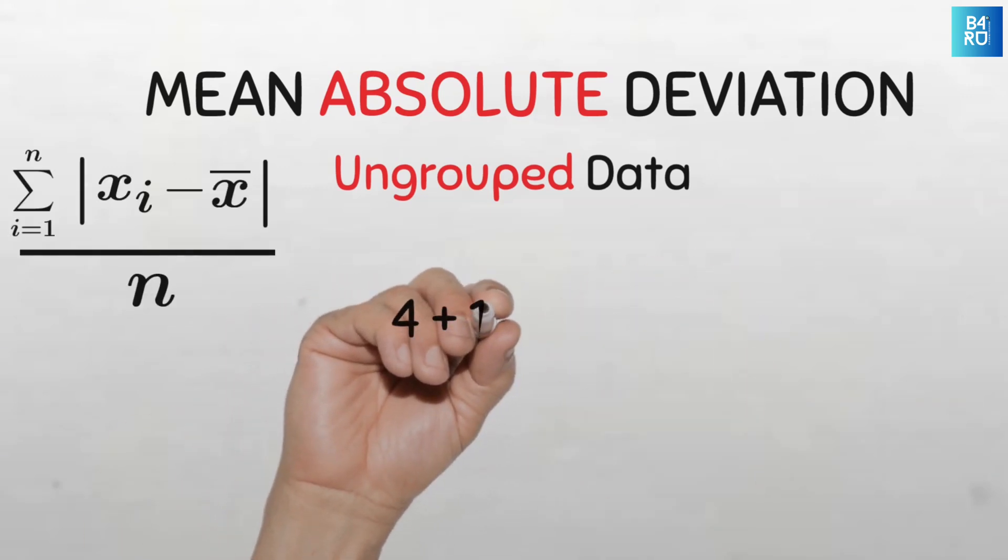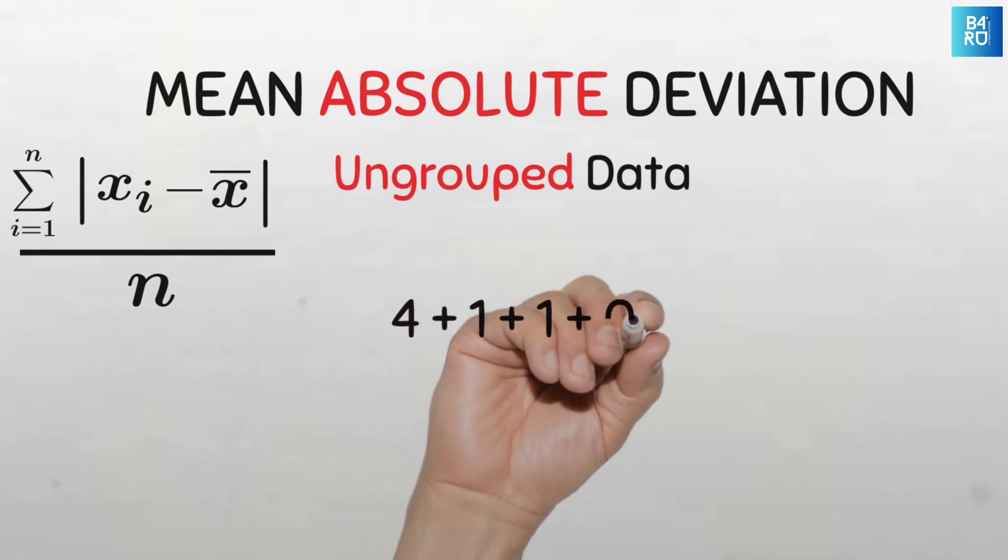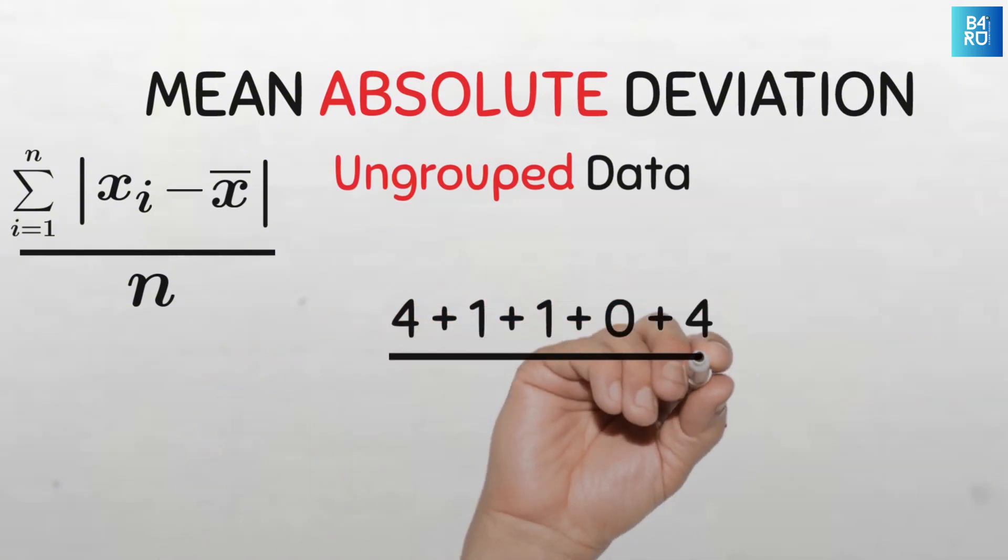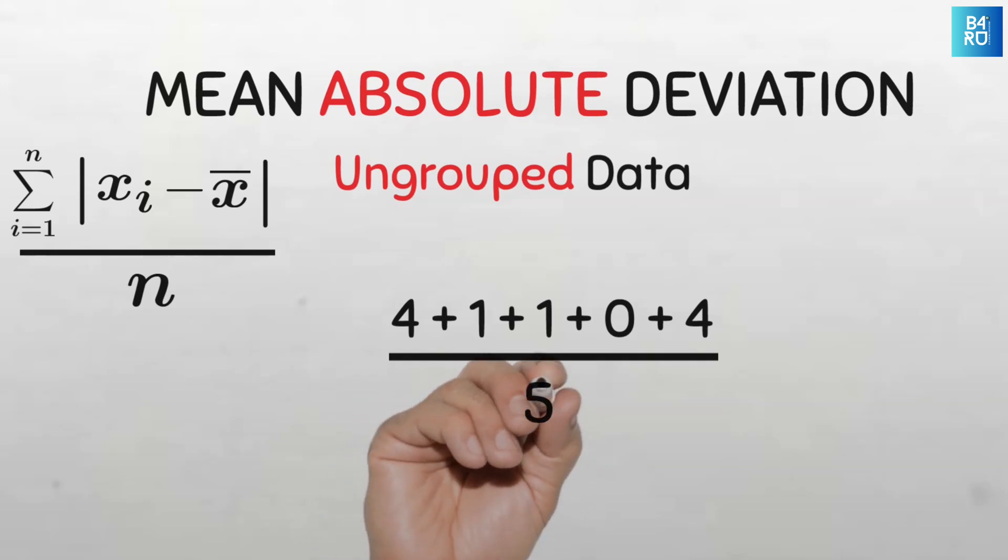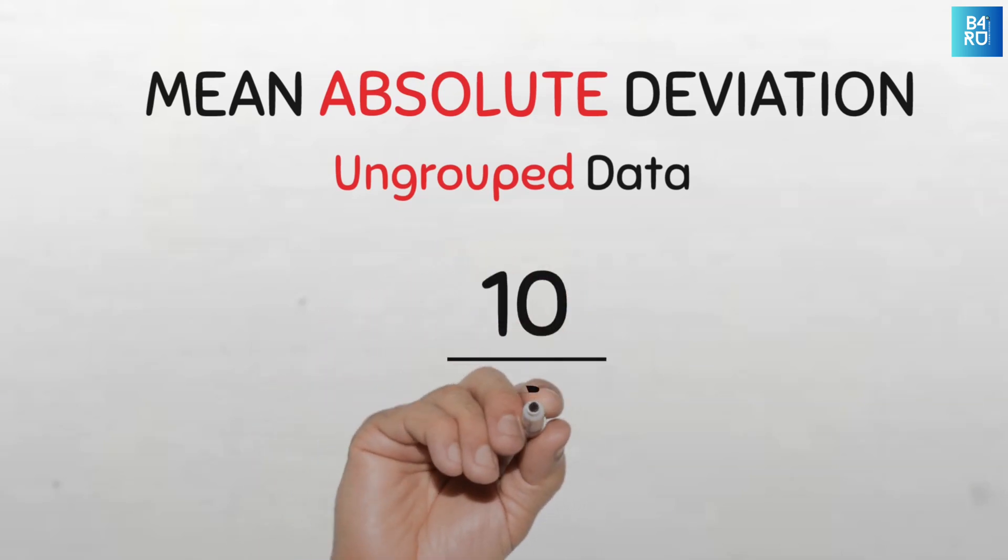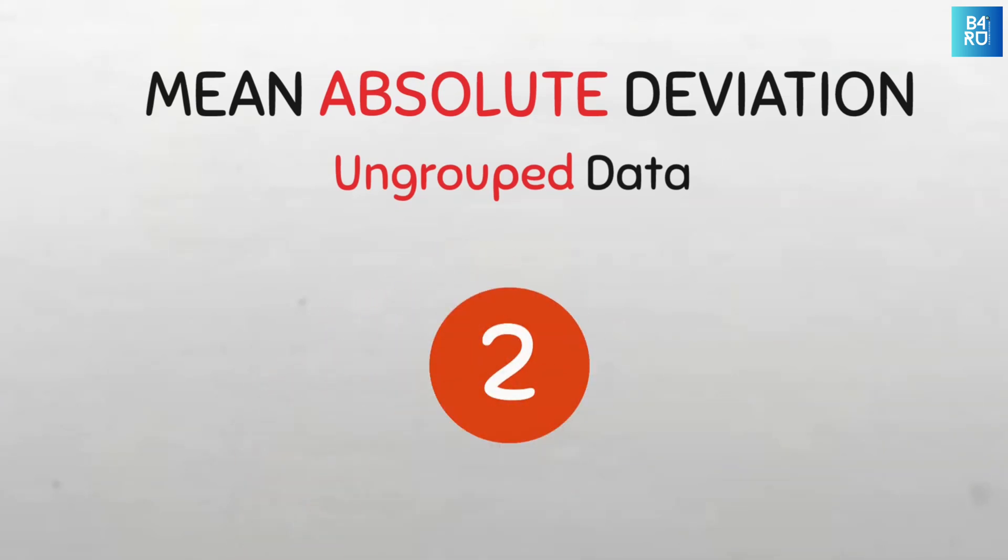So, 4 plus 1 plus 1 plus 0 plus 4, that's 10. And finally, we divide by n, which is 5. So we have 10 over 5, which will give us a mean absolute deviation of 2.